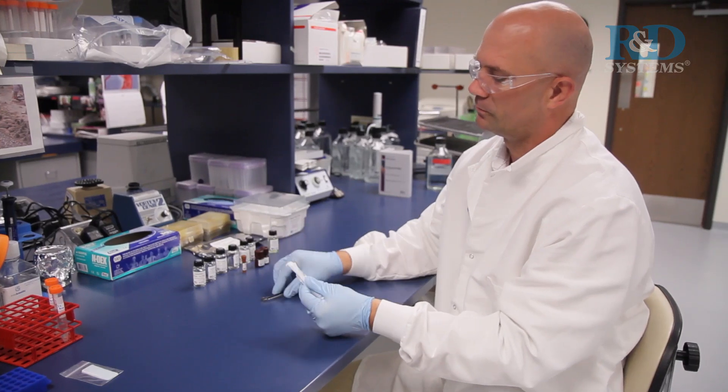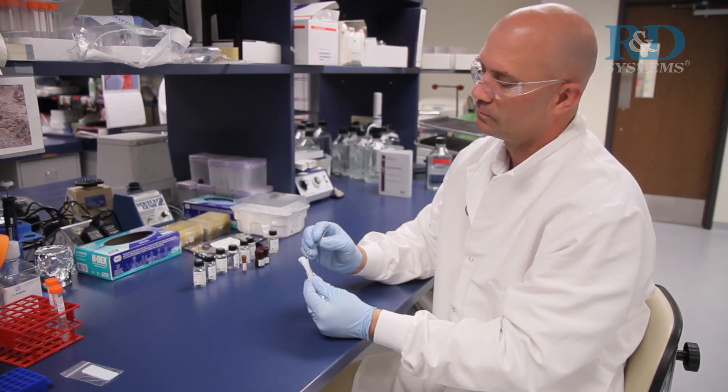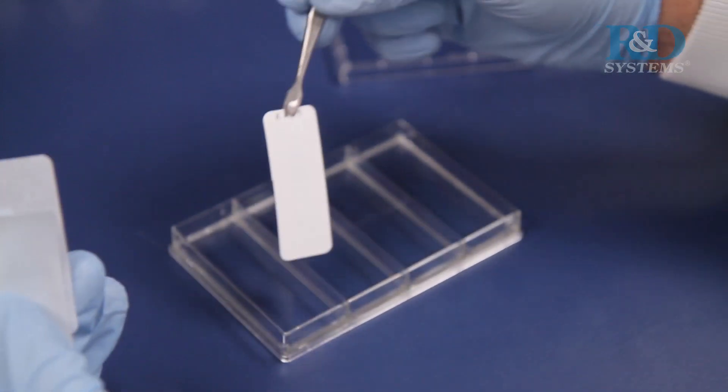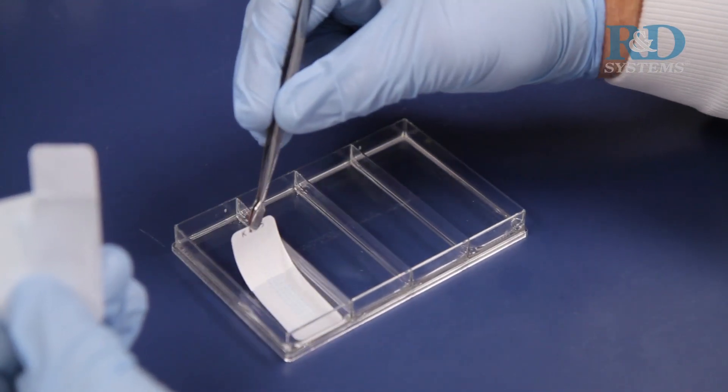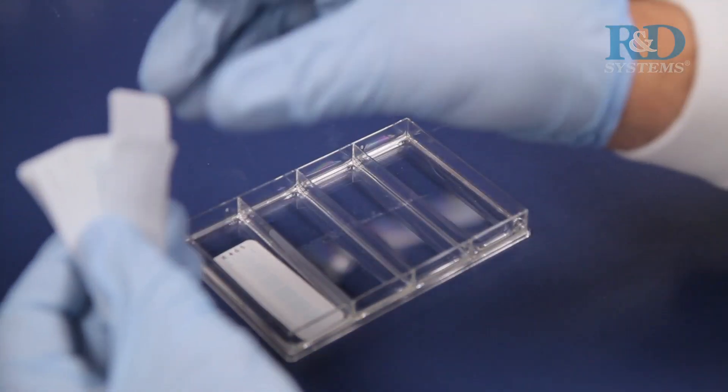Using flat tip tweezers, remove each membrane to be used from between the protective sheets and place in a well of the 4-well multi-dish. The array number should be facing upward.